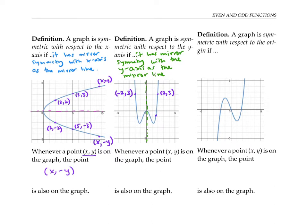In fact, if I take any point with coordinates (x, y) and I want its mirror image with the y-axis as a mirror line, I'm going to get a point with the same height — the same y coordinate — but the opposite x coordinate. So I can say that a graph is symmetric with respect to the y-axis if whenever a point (x, y) is on the graph, the point (-x, y) is also on the graph.